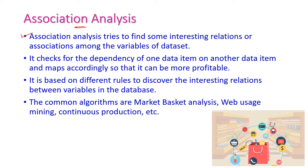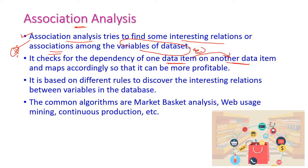The next feature is association analysis. This finds the interesting relations or associations among variables of a data set, and also identifies the dependency between one data item and another — how one data item is dependent on another. It has its own rules to discover the interesting relations between data items or variables in the database. The common algorithms used in association analysis are market basket analysis, web usage mining, and continuous production.